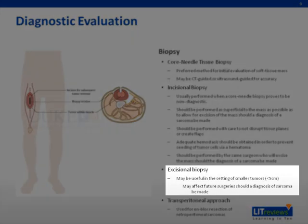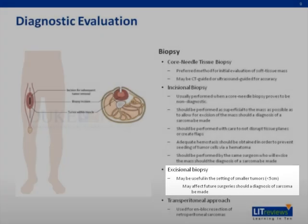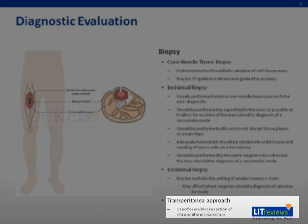An excisional biopsy involves removing the entirety of the tumor at once and may be useful for small tumors, usually less than five centimeters. However, this should be performed when the diagnosis of sarcoma is low on the differential, as it may affect future surgery should sarcoma ultimately be diagnosed. A transperitoneal approach can also be performed primarily for sarcomas found in the abdominal cavity, allowing for an en bloc resection of retroperitoneal sarcomas through a midline abdominal incision.